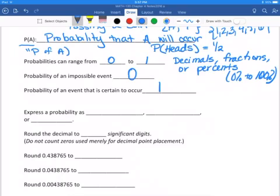Like I said, we can express the probability as a fraction, a decimal, or a percent. Now, we're going to round to three significant digits, unless we're told differently. A significant digit is a digit where we're not using zeros that are just for decimal point placement. So any zeros that come before the first number do not count in those three significant digits.